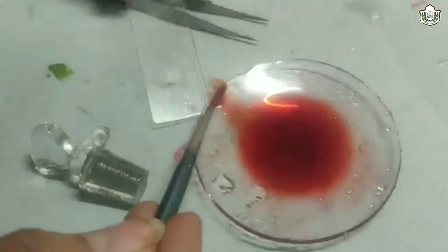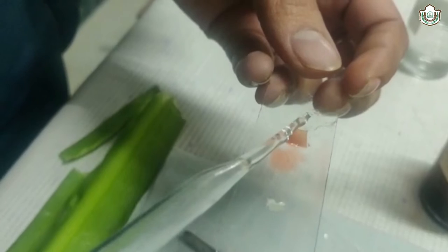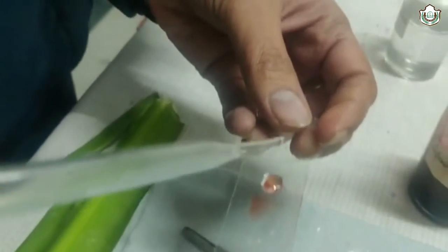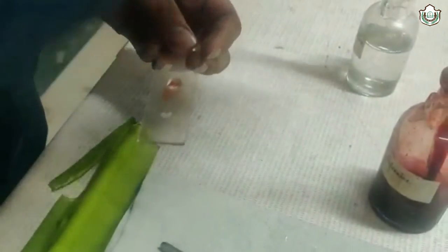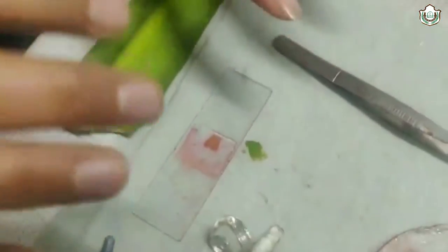Now place it on the microscopic slide. Put a drop of glycerin over it and place the cover slip at 45 degree angle. Now observe under 10x microscope.